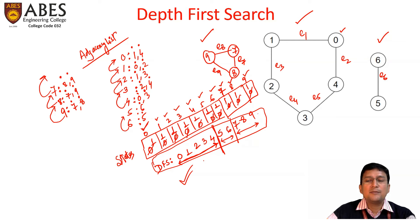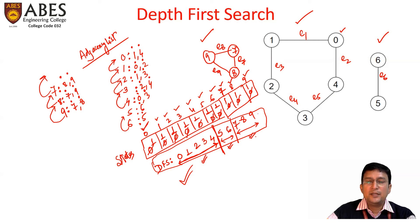And this is the total number of connected components in the graph. This is the first connected component, this is the second connected component, and this is the third connected component. So if you simply include a counter initialized to zero in the DFS iterative version, the number of times the recursive version is called from the iterative one equals the number of connected components in the graph.